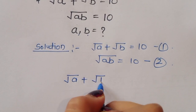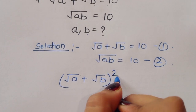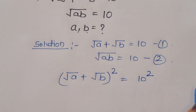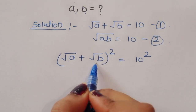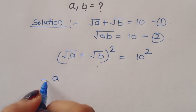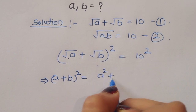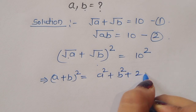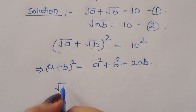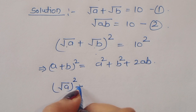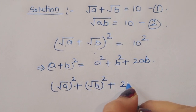Now taking equation 1: square root of a plus square root of b, we are squaring the whole expression, so it is equal to 10 squared. Now square root of a plus square root of b whole squared — we know the formula: (a + b)² equals a² plus b² plus 2ab.